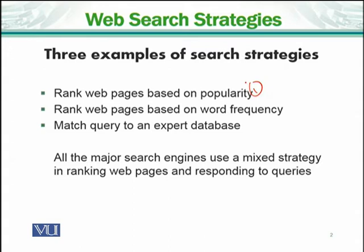Second, rank web pages based on word frequency. This means a cricketer whose most documents are available on the internet will appear. Maybe, as a popular cricketer if I talk about current time, the answer could be Virat Kohli. But when we talk about word frequency, it could be a player whose most documents have been written about them — maybe Sachin Tendulkar, a former player with the most information on the internet.